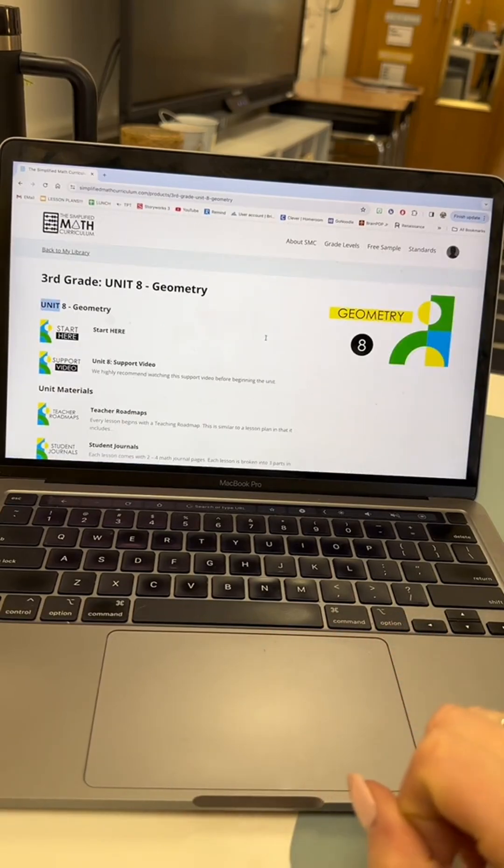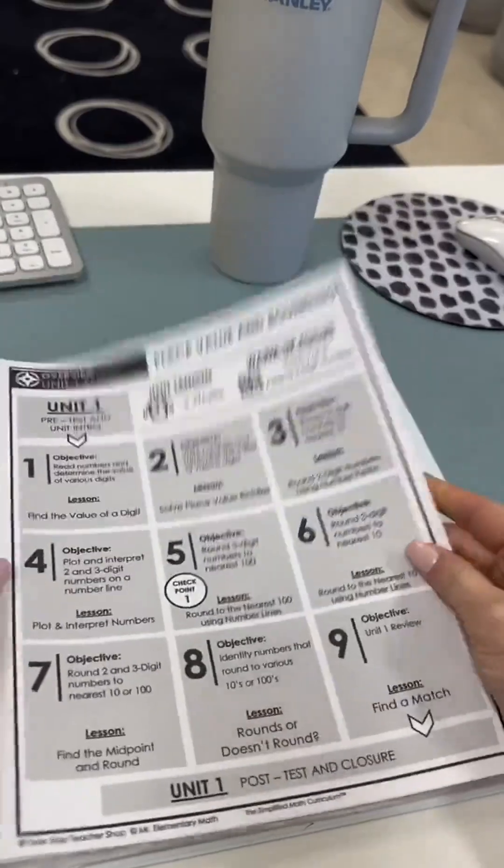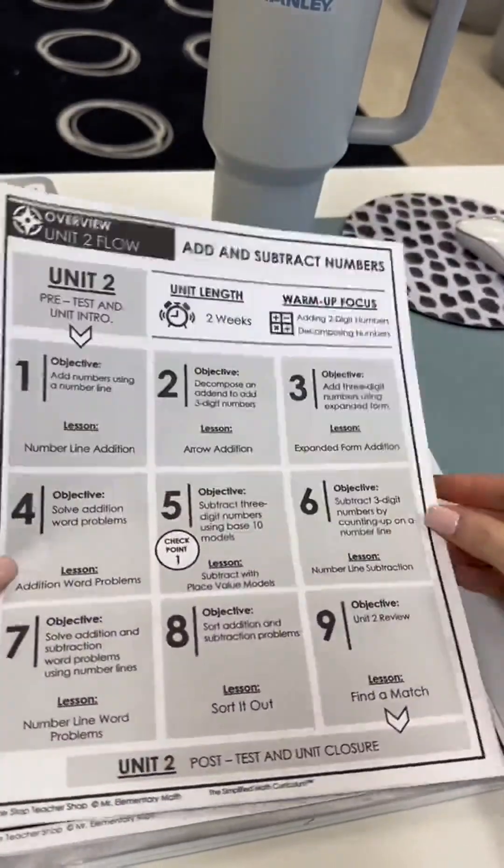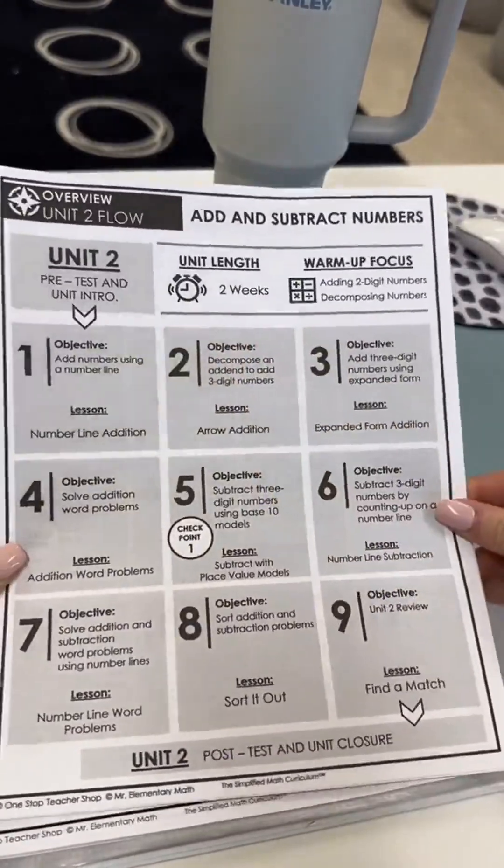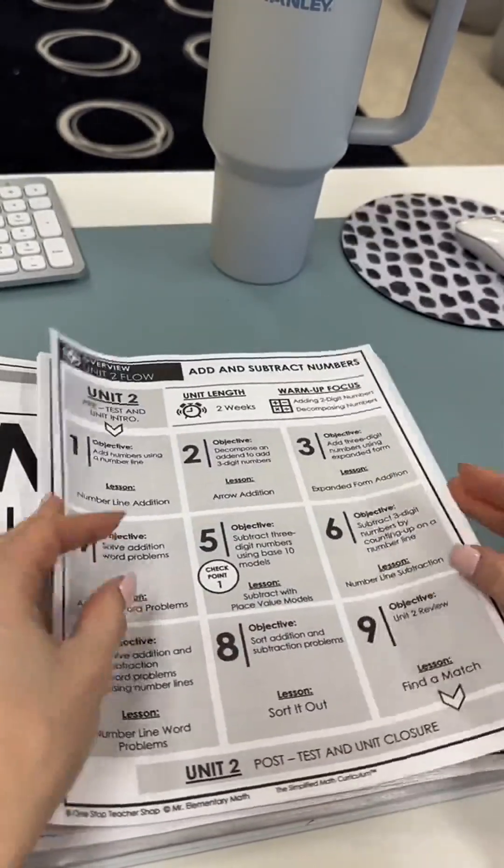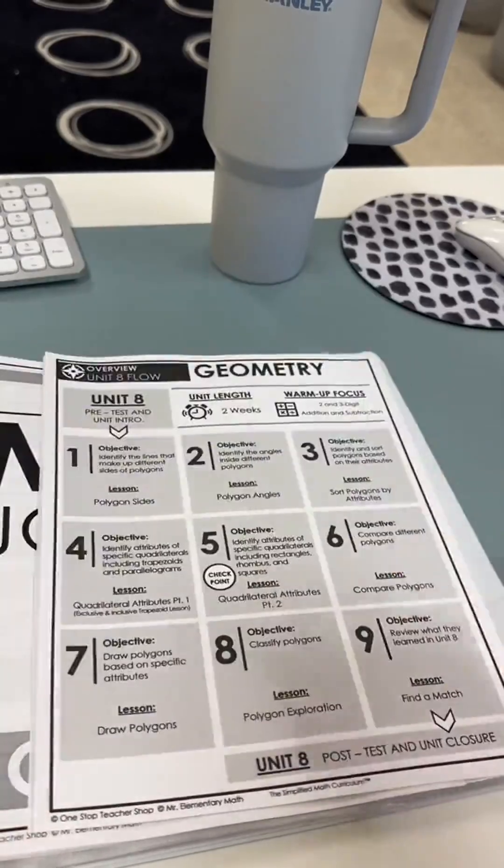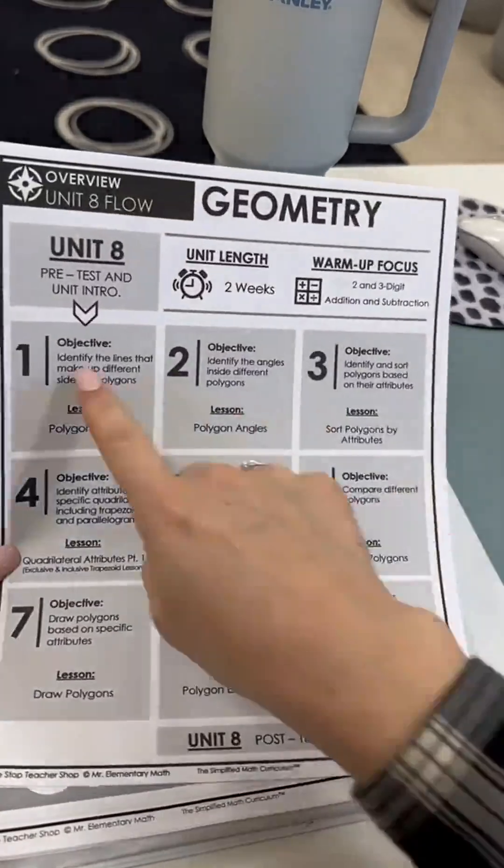One thing I really like is that obviously it's a simplified process, being that simplified is literally in the name. But one thing I really like are the teacher roadmaps. It gives the suggested length of time, each lesson, and the objective for it. And it's truly just such an organized way to ensure that you're going through every standard that you need to go through.